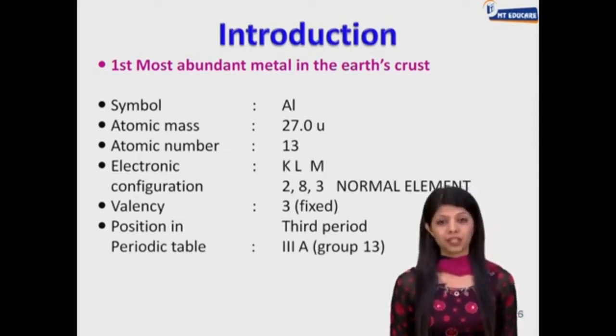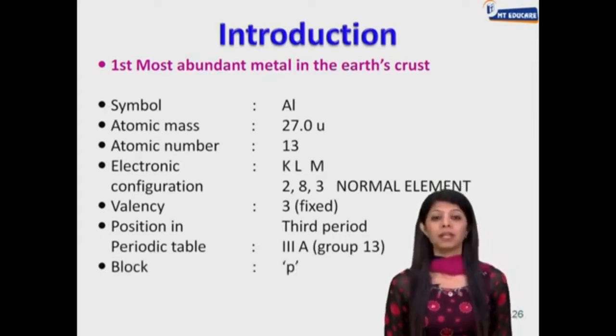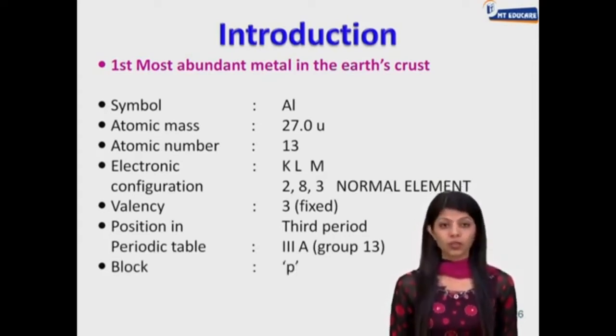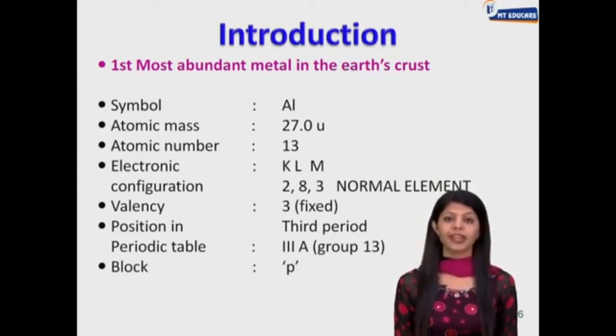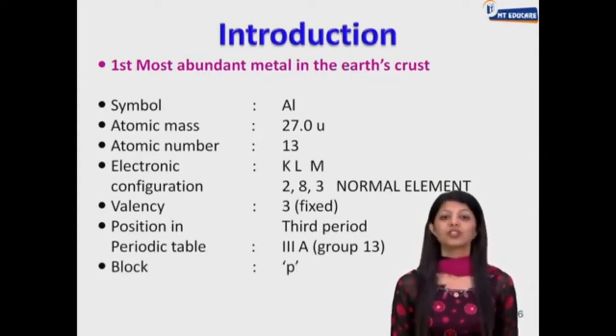Its position in the periodic table: since it has 3 electrons in the last shell, it is in the third period and third group, also called group 13. It belongs to the p-block. In the periodic table there are four blocks: s, p, d, and f — and aluminium belongs to the p-block.